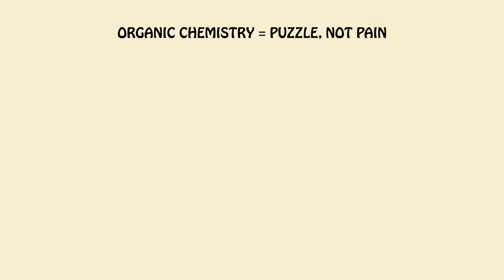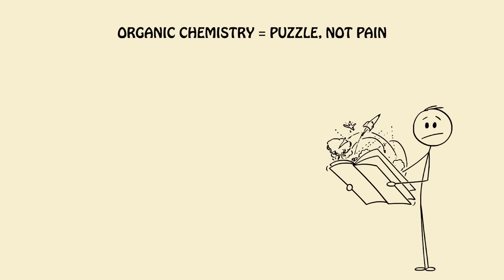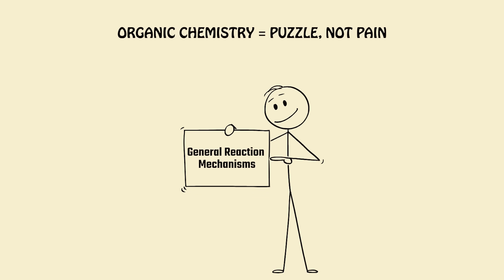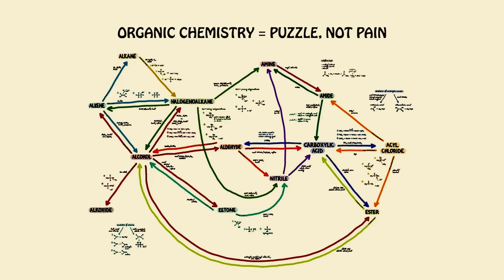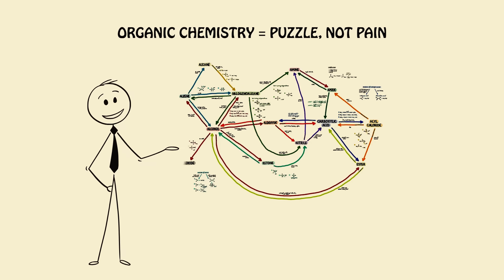Organic chemistry equals puzzle, not pain. People fear organic. Here's how to make it easy. Focus on general reaction mechanisms. Master these four things: nucleophiles and electrophiles, SN1 vs SN2, reaction series like alcohol to aldehyde to acid, and functional group conversion charts. Tip: Make a reaction map, one page where every reaction is connected like a subway line. Now you won't just memorize, you'll predict.